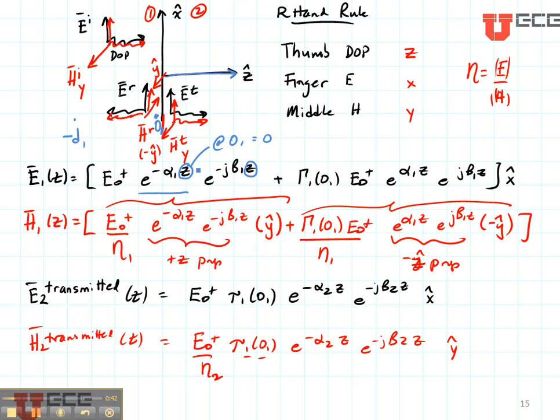But if we wanted to consider the point minus D1, then we put in minus D1 for this case. Right here we do the same thing. All of these values of Z are going to be the same.